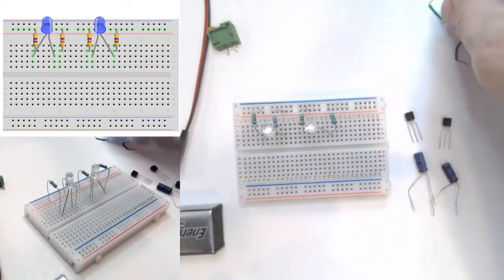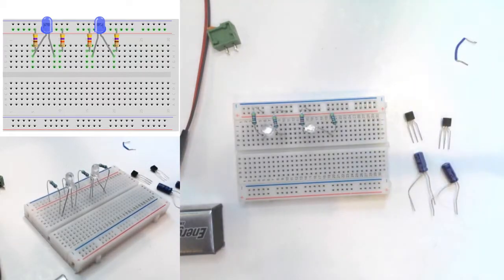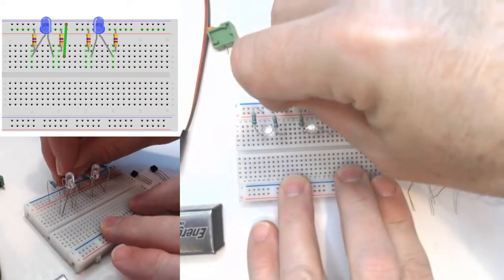Next, we can put in the jumpers that will be the connection for the transistors to go to the ground or the negative bus strip. We can do this before or after we put in the transistors. It doesn't matter.